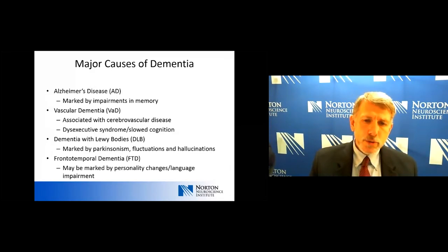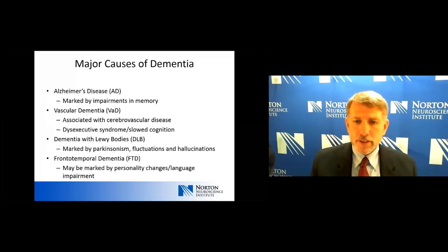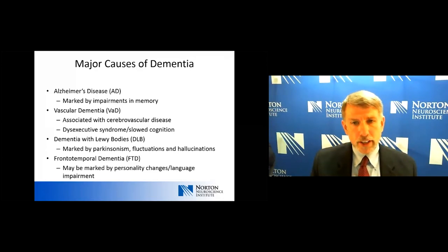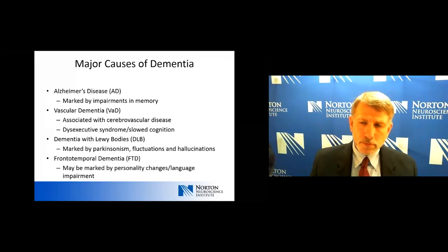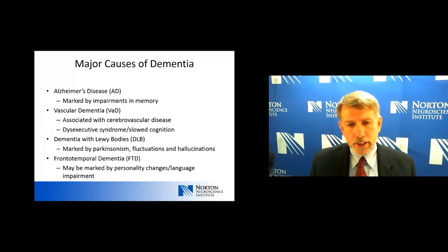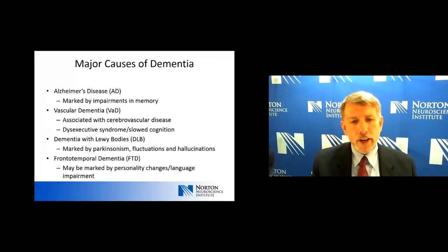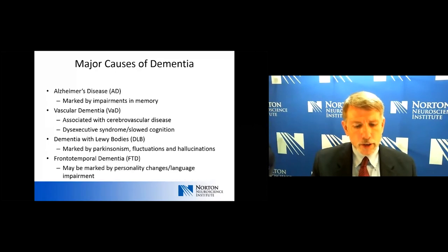Then there's dementia with Lewy bodies, often marked by Parkinsonism, fluctuations in cognition, and hallucinations — particularly visual hallucinations. And finally, frontotemporal dementia, which is really a category in itself with at least three main subcategories, and can be marked by changes in personality or language impairment.